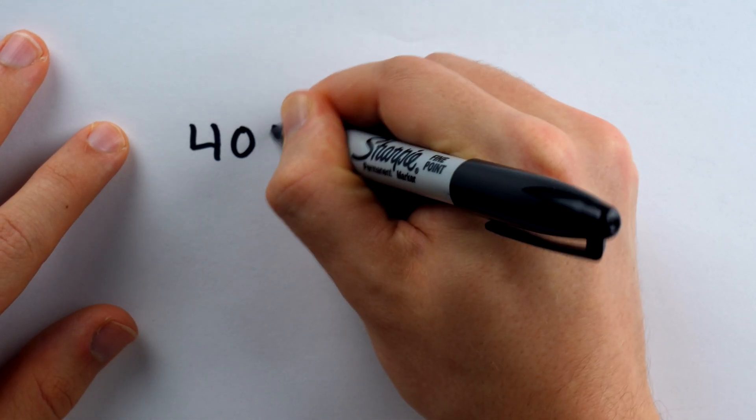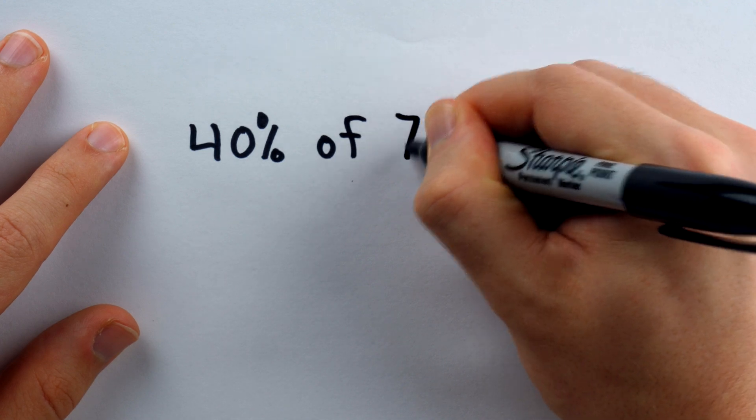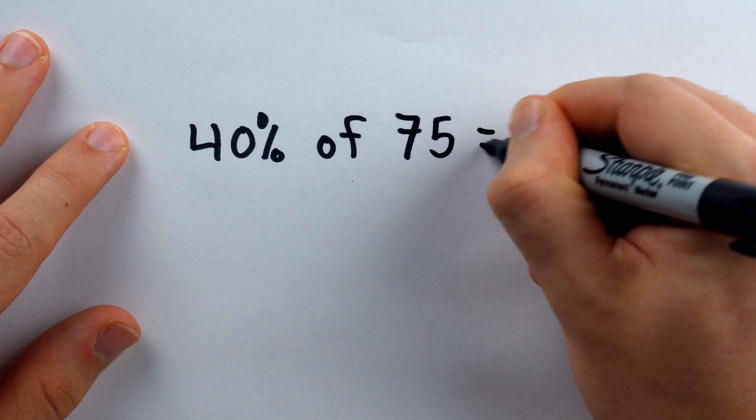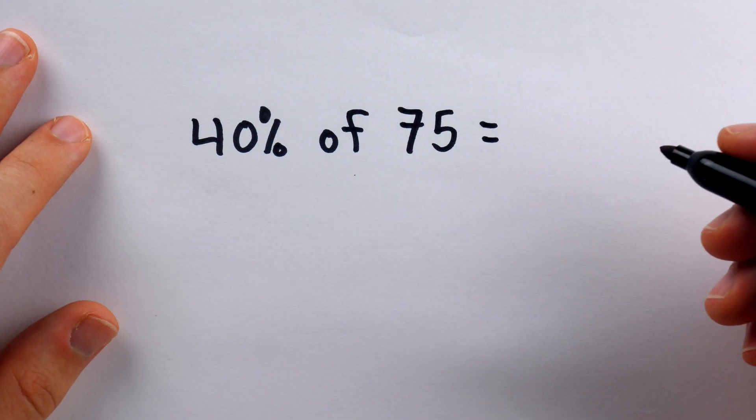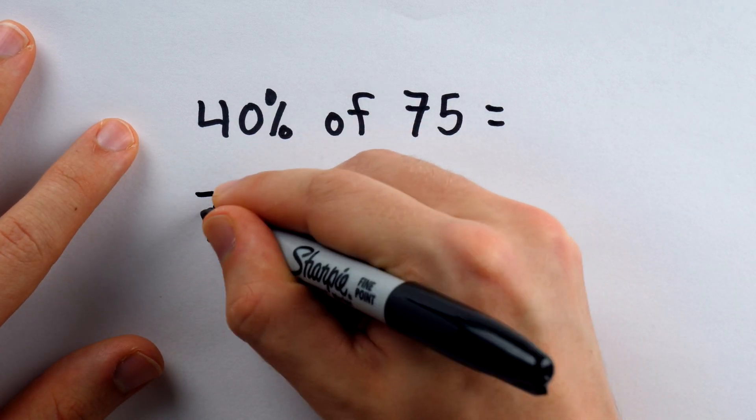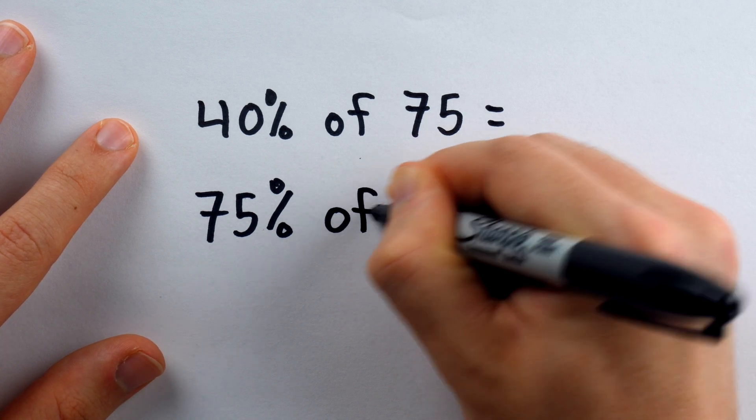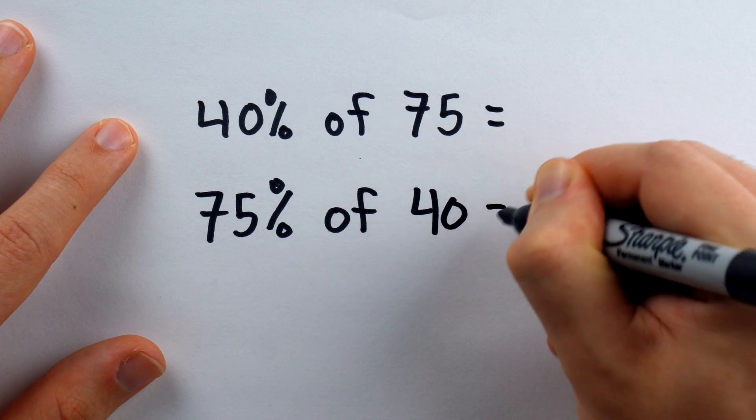It seems like over the past couple of years, the internet has collectively had this realization that something like 40% of 75, which might not be immediately obvious, is the same as 75% of 40. You can just switch which number the percent is on.